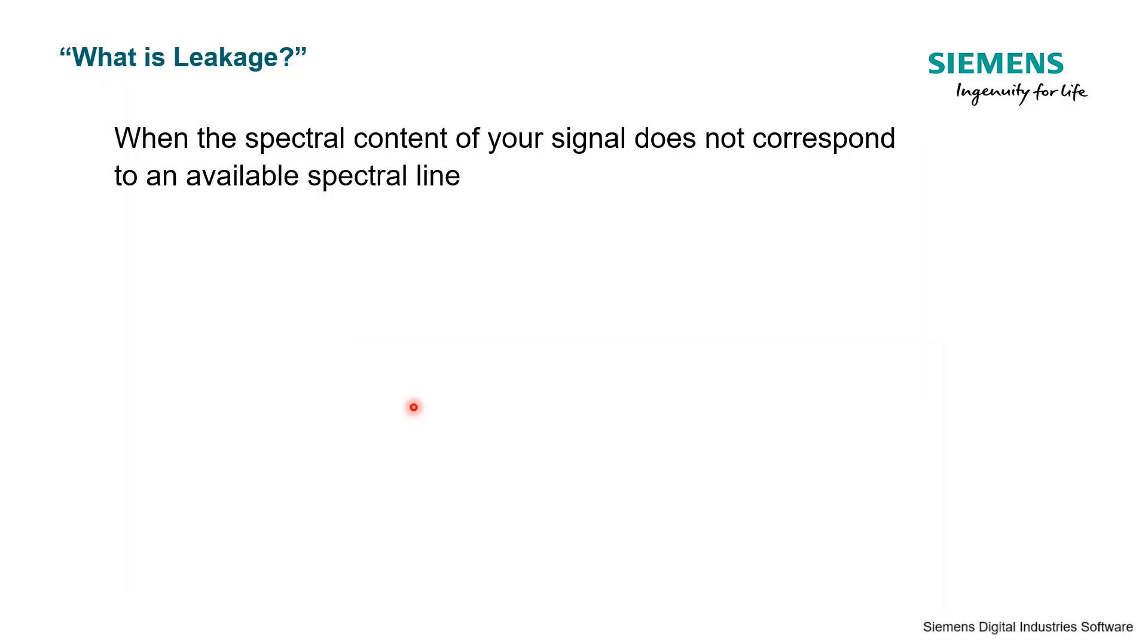What is leakage? Really, basically it's when we have spectral content from what we're measuring that doesn't correspond to a spectral line. Let's look at an example of that.